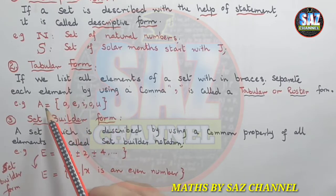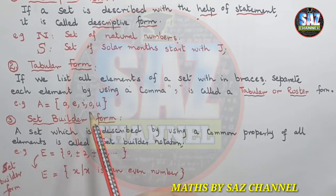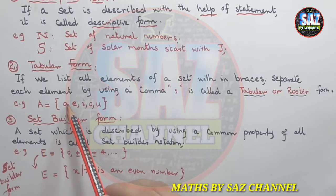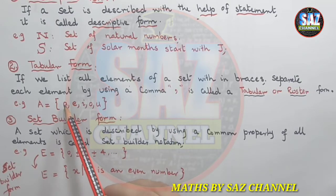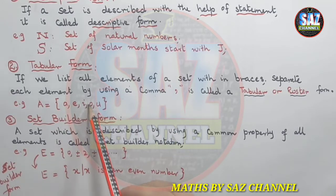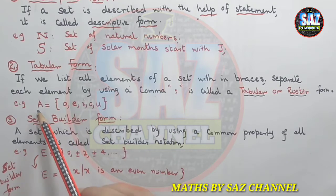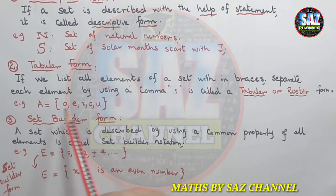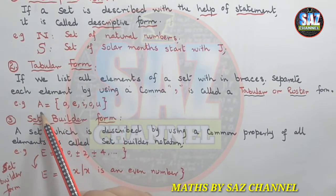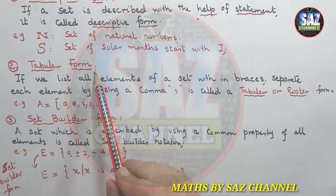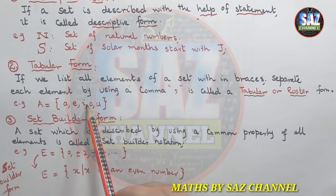As the question says, there is a set of vowels. We recall that A, E, I, O, U are vowels. So in this example, we have expressed the same set in the tabular form.